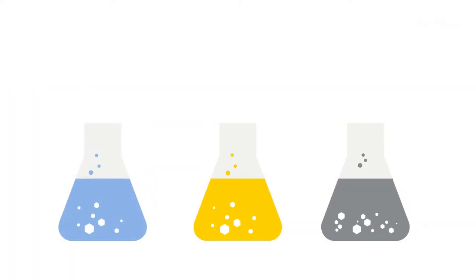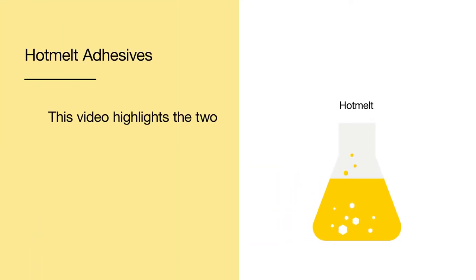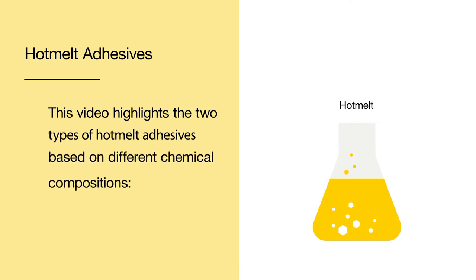Constant innovation lies behind our development of new emulsion, hot melt and solvent adhesives, technologies that solve the labelling challenges of both label printers and brands. This video highlights the two types of hot melt adhesives based on different chemical compositions: UV acrylic and rubber-based.